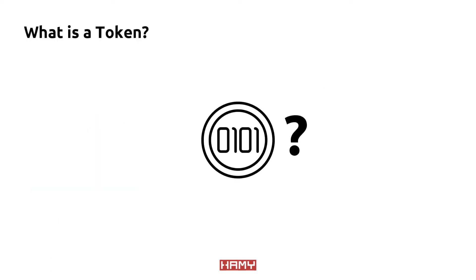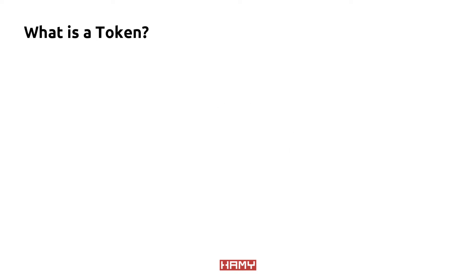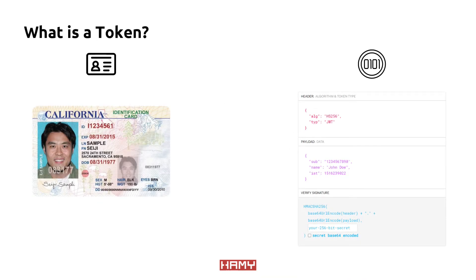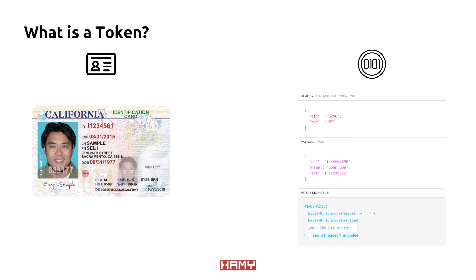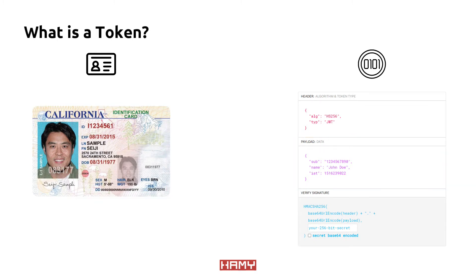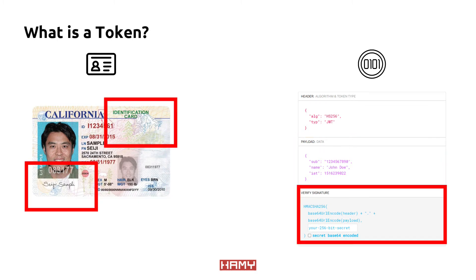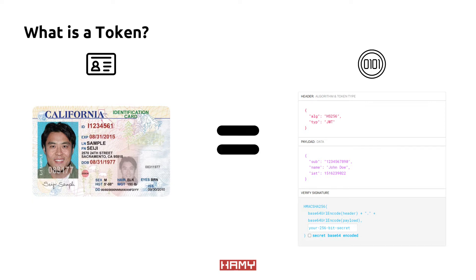But what is a token? Within the context of authentication, we can liken tokens to an identification card. Both provide mechanisms to hold information, like who the ID belongs to, and ways to prove that the ID is real. Because IDs and tokens are used similarly within this context, we can further explain how tokens work through an ID scenario.